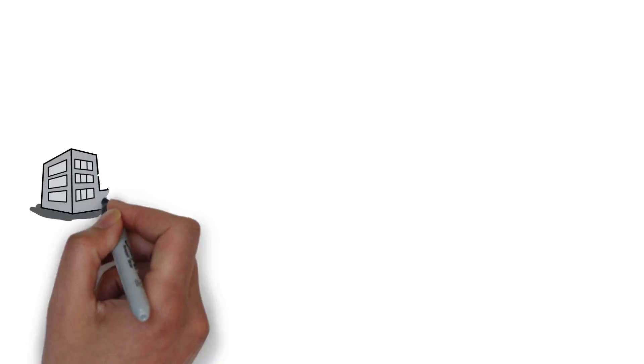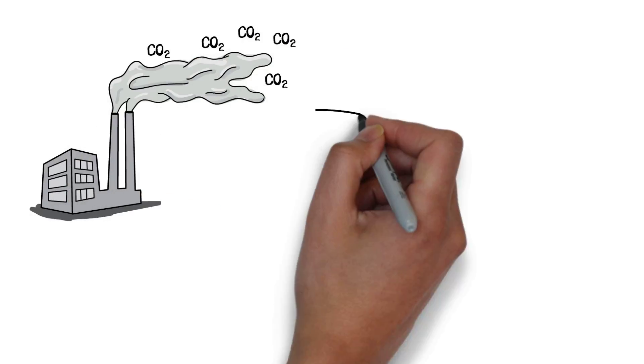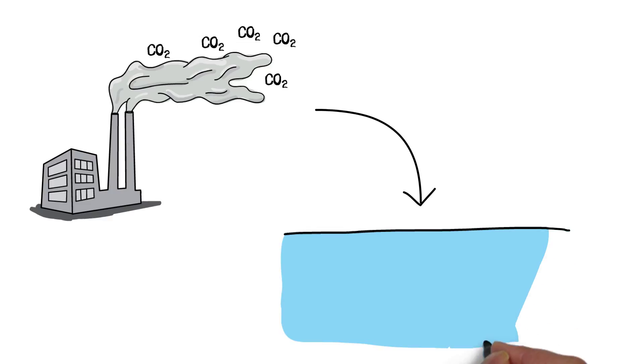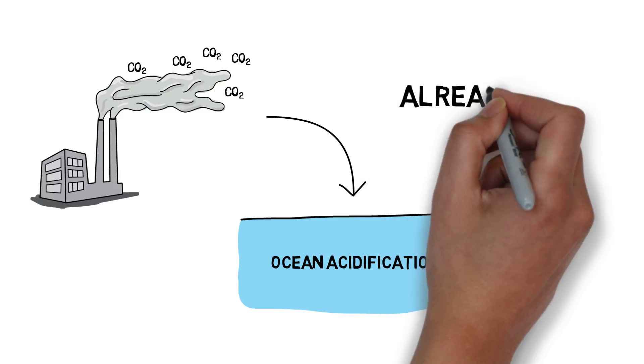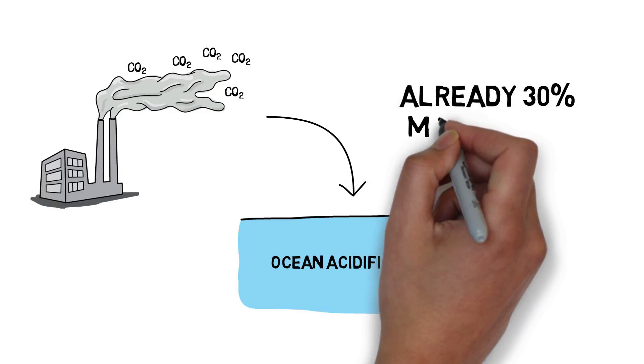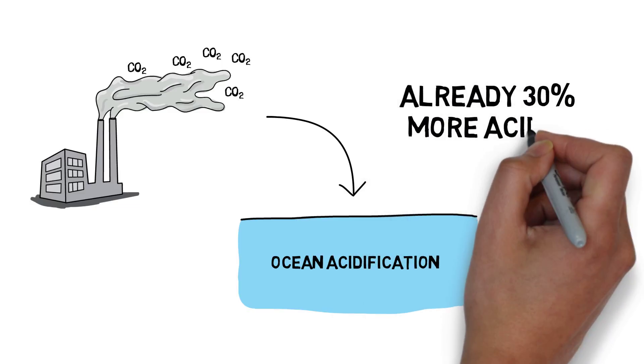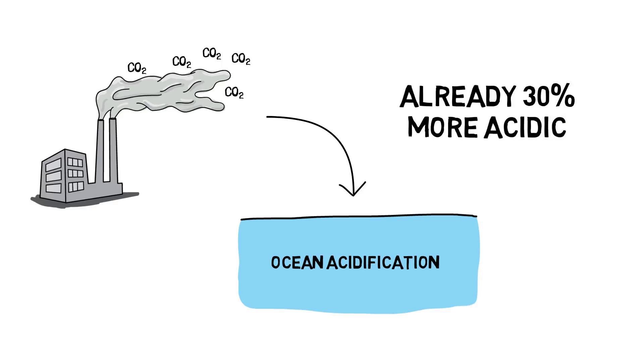Ocean acidification, also known as global warming's evil twin, results from CO2 in the air dissolving into the ocean, making it more acidic. Human activities have already made the ocean 30% more acidic in the past few centuries, and the situation will keep getting worse as we continue to emit CO2 into the atmosphere.